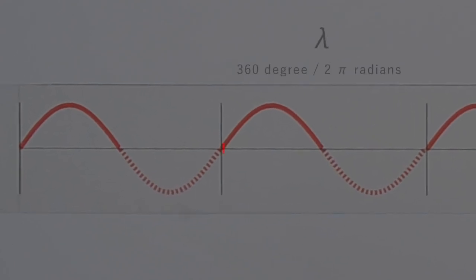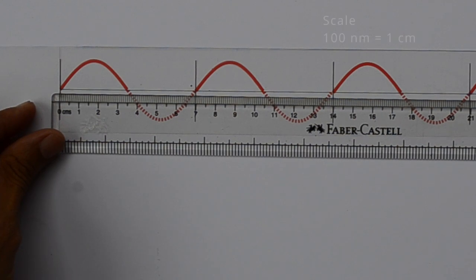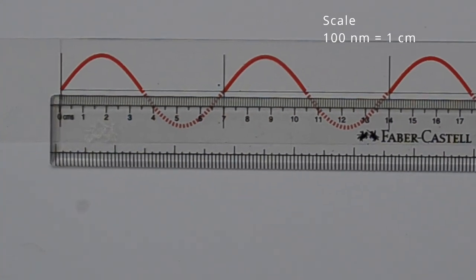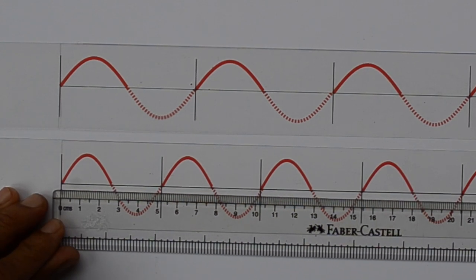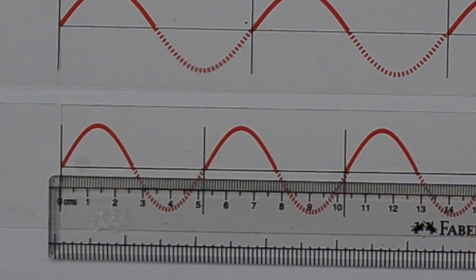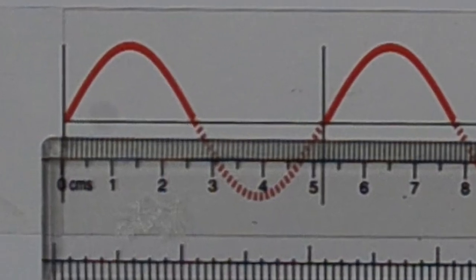One wavelength is also 360 degrees or 2 pi radians. Wavelength of red light varies from 620 to 700 nm. We will take it as 700 nm and scale it as 7 cm. Wavelength of red light in water which has a refractive index of 1.33 will be 520 nm or 5.2 cm as wavelength reduces in denser medium.